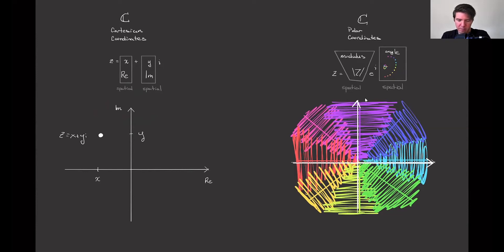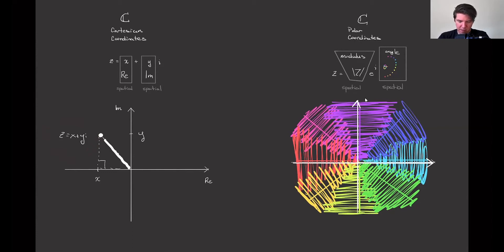Now you can convert from Cartesian coordinates to polar coordinates and vice versa. What we'll do is imagine this point x plus yi as giving us a right triangle in the plane. So it has the hypotenuse and then it has these two sides — this is a right triangle. The hypotenuse of this right triangle is what we think of in the polar coordinate system as being the modulus. One way to represent that modulus is by saying this is the absolute value of your complex number z — so the absolute value of z — and that's going to be the modulus.